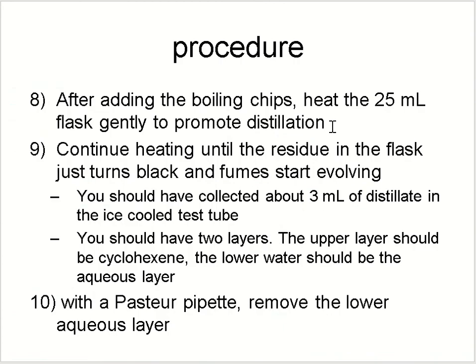After adding the boiling chips, heat the 25 mL flask gently to promote distillation. Continue heating until the residue in the flask just turns black and fumes start evolving. Remember, the boiling point of cyclohexene is around 80°C, so you need to heat the round bottom flask up to about 85°C to convert all the cyclohexene from the cyclohexanol mixture. After distillation, you will find two layers — the upper layer will be your cyclohexene and the lower aqueous layer will contain the remaining water.